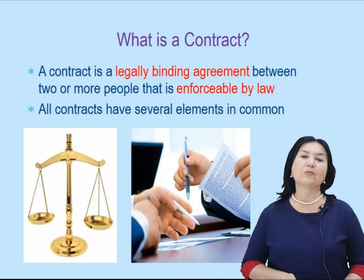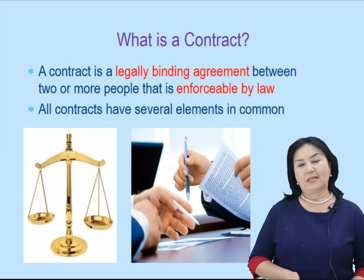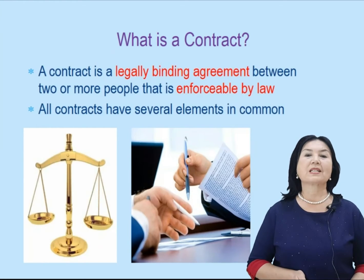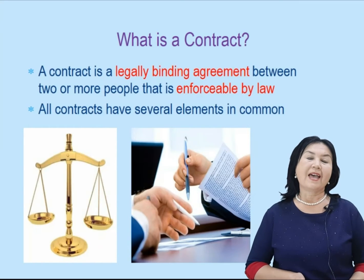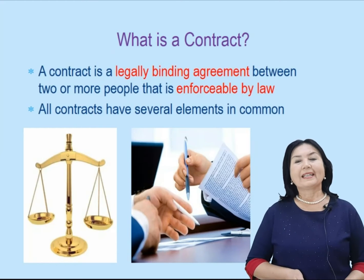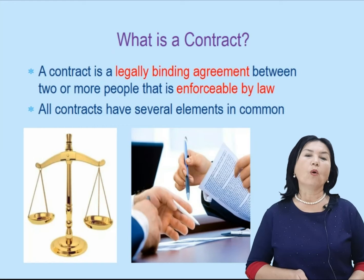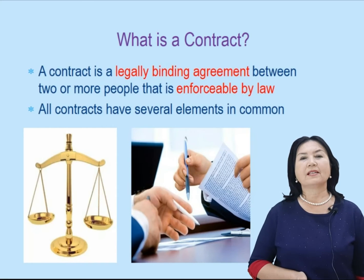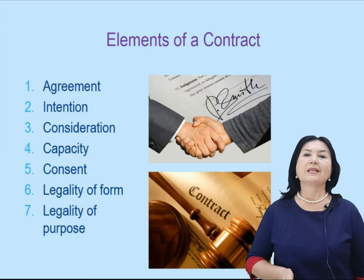Now, dear students, I am going to explain what is a contract and its elements. When we talk about elements of contract, first we have to understand exactly what is a contract. A contract is a legally binding agreement between two or more people that is enforceable by law. All contracts have several elements in common. Here you see the elements of contract.